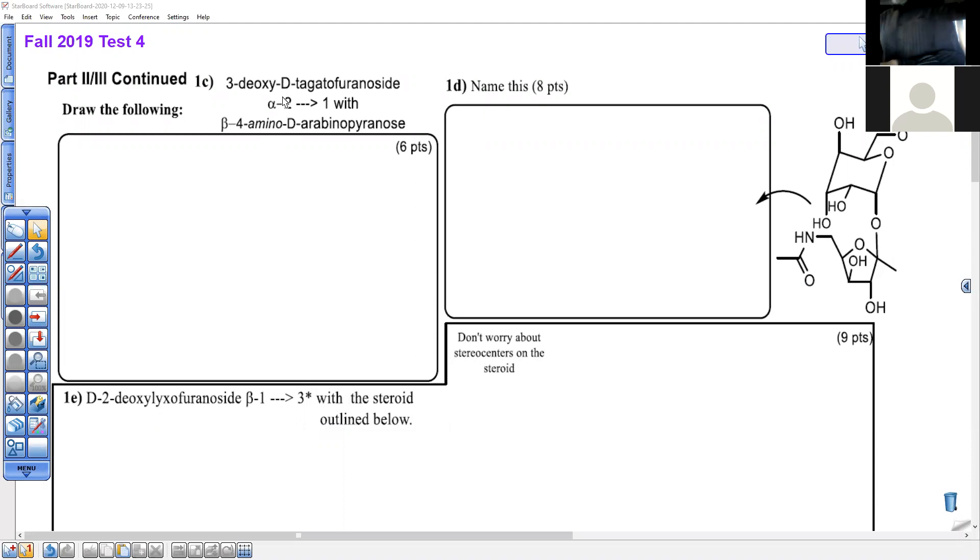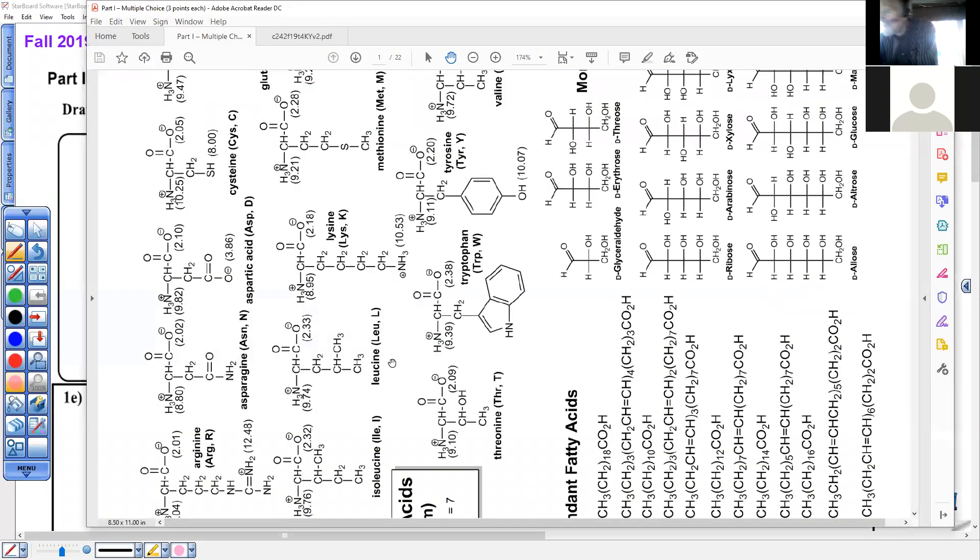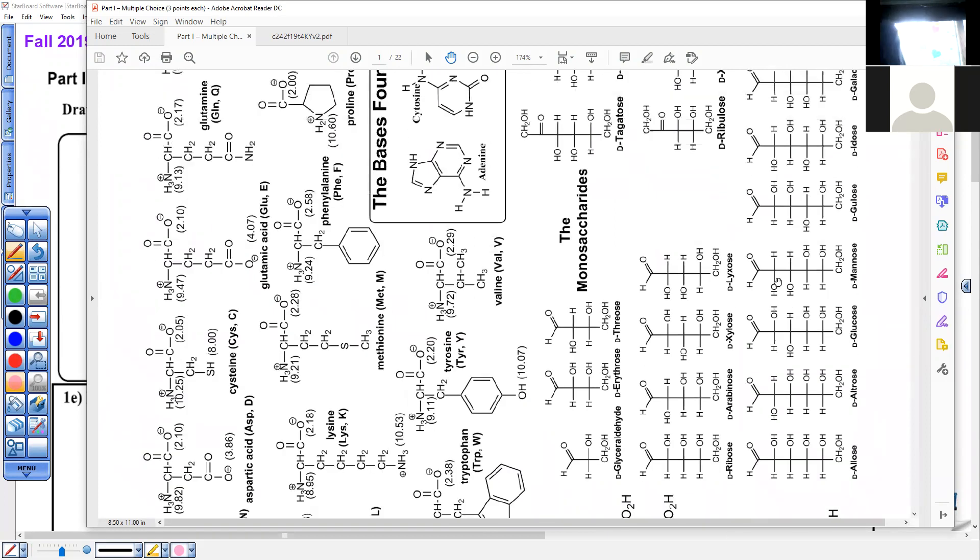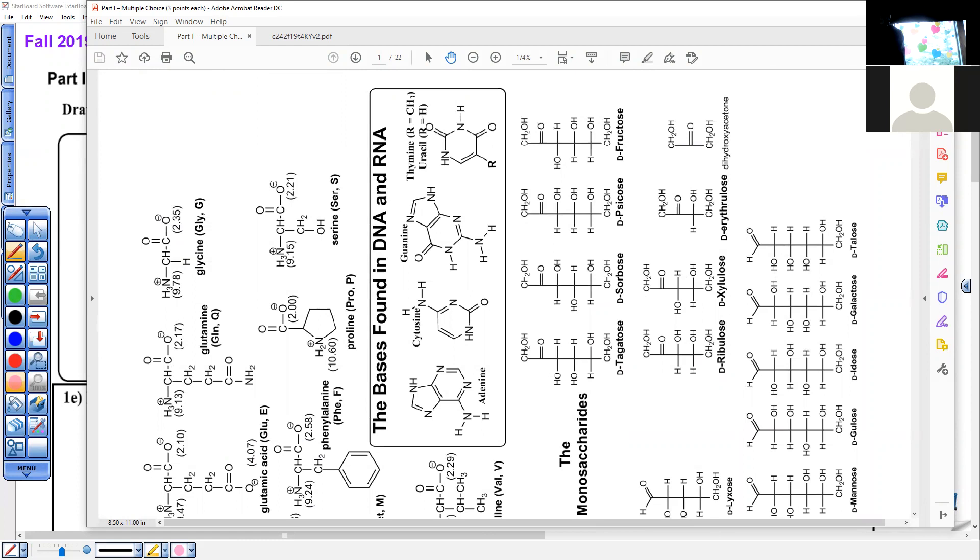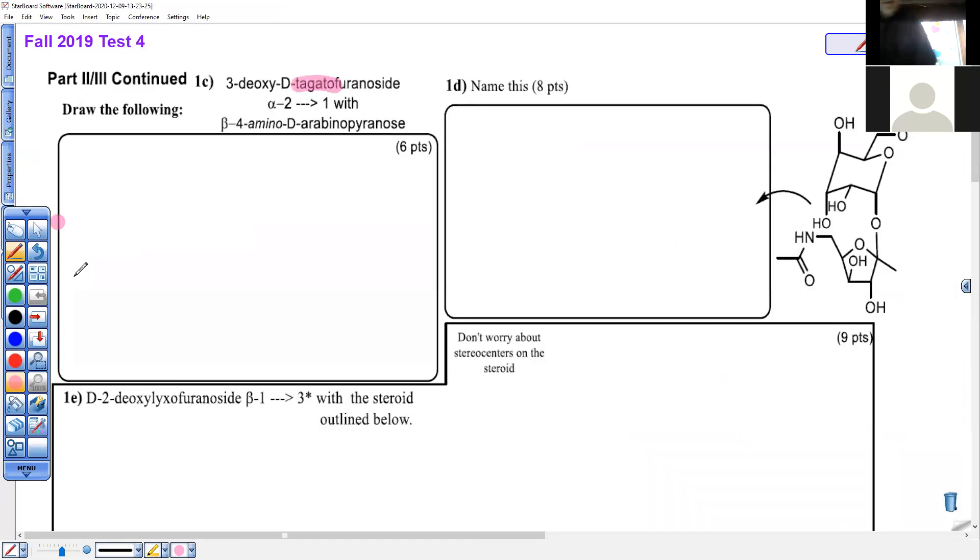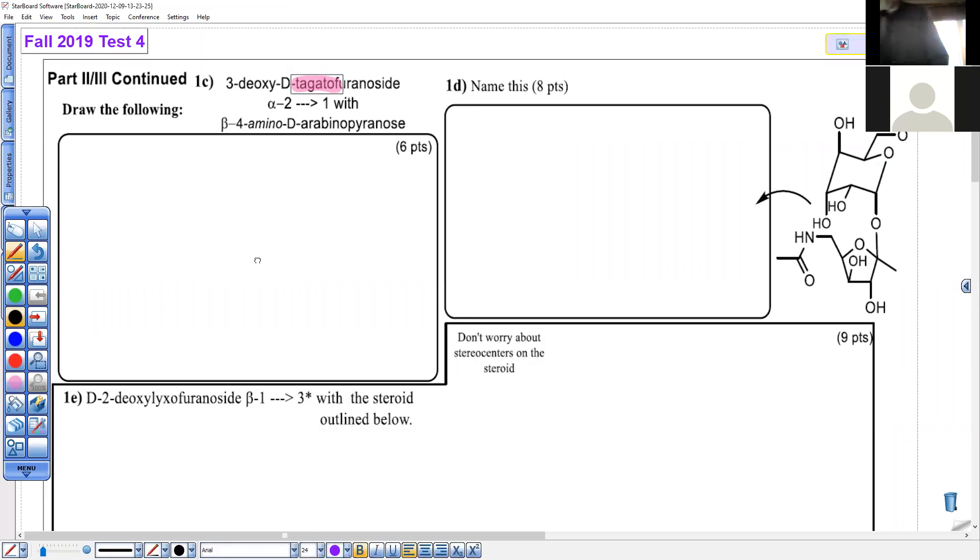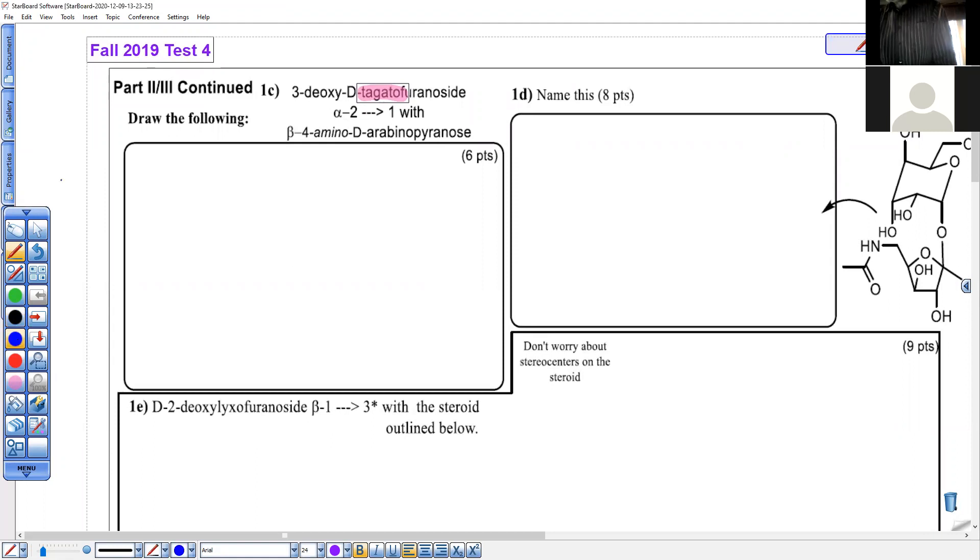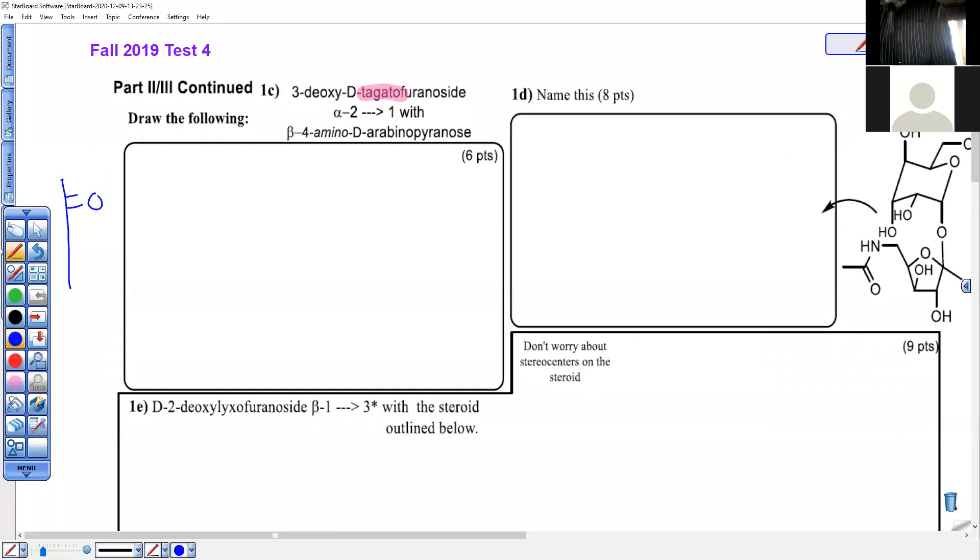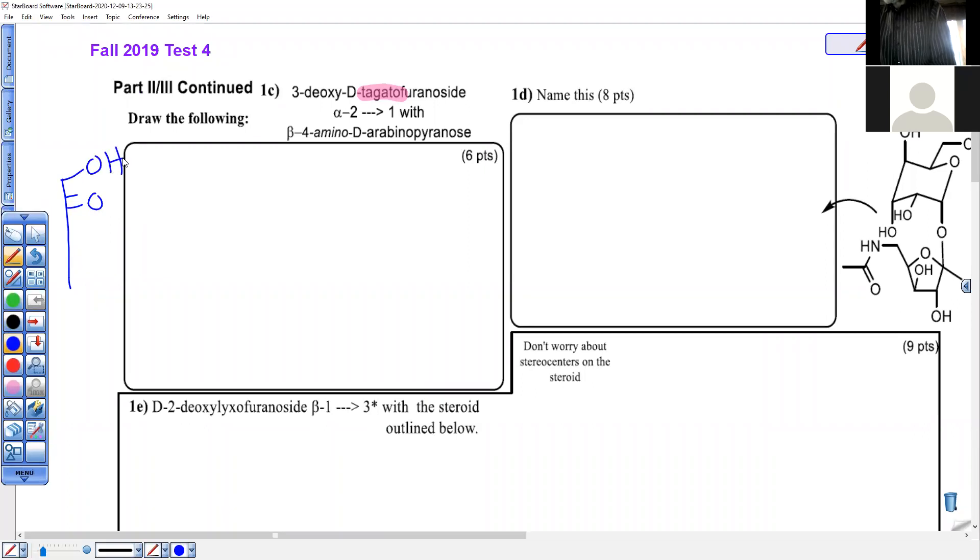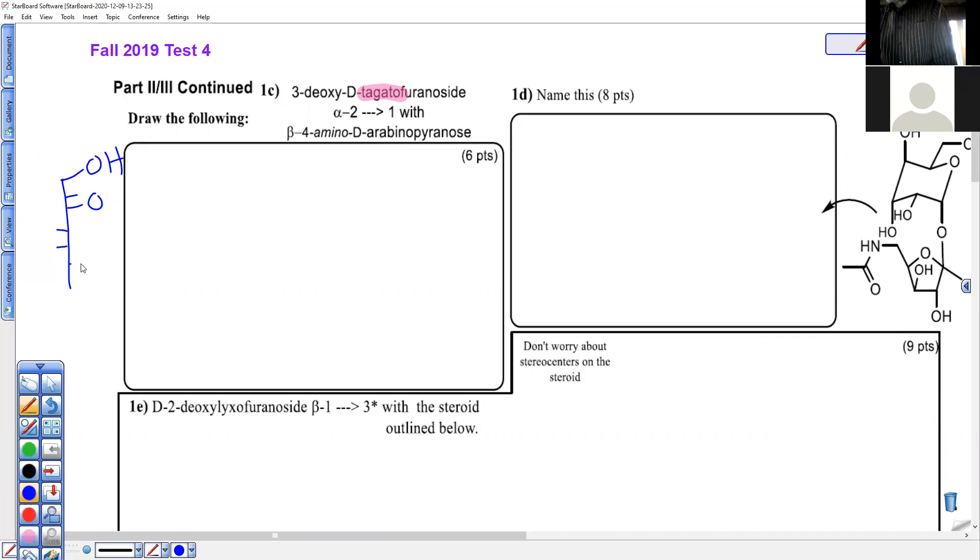So we're going to have to find tagatose from our handout. It's a ketose, and I have Fall 19 open. Tagatose is right here. Ketose, six carbons, left, left, right on the stereo centers. We got it. So tagatose, move it over a little bit here. We're starting from here. Ketos, and left, left, right, and OH.